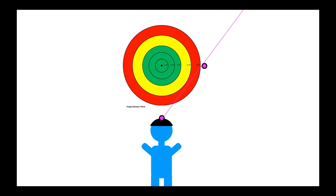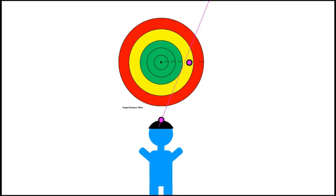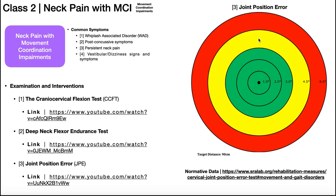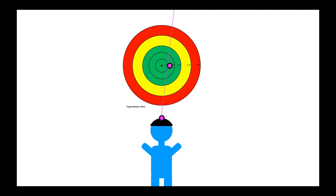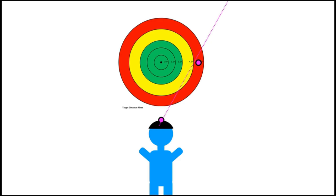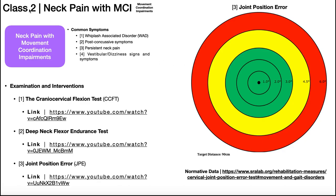In a person with movement coordination impairments, after rotating their head all the way to the right with eyes closed and returning, the laser might land in the yellow region — not necessarily a definitive positive, but may indicate some joint position error and movement coordination impairments. If the laser lands in the red region, that is definitively a positive test and it's very likely the person has movement coordination impairments. One paper recommended doing six repetitions in each direction — right rotation, left rotation, cervical flexion, and cervical extension. The more repetitions that land in the red or yellow, the more likely the person has movement coordination impairments.